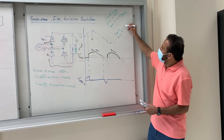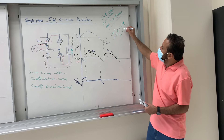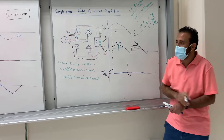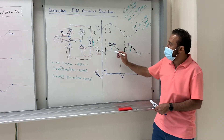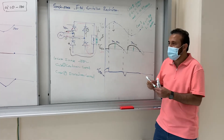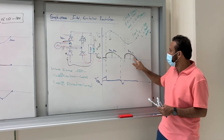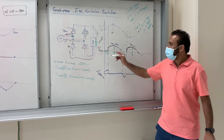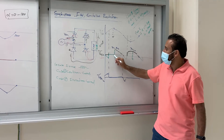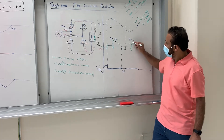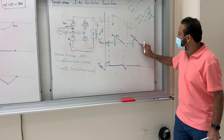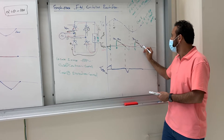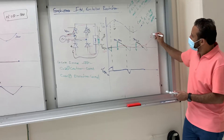Case two — discontinuous current — occurs when alpha is large and the inductance is small. For example, with alpha = 90° and a small inductor, the inductor discharges before the next firing angle. The current flows only from each firing angle to where it decays to zero, then is zero until the next pulse. This is called discontinuous current.